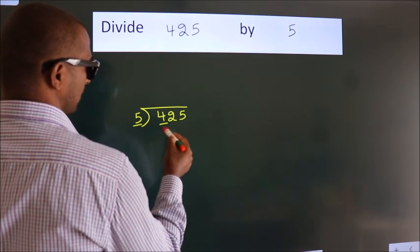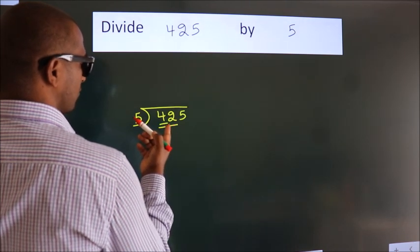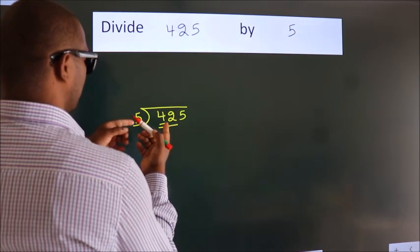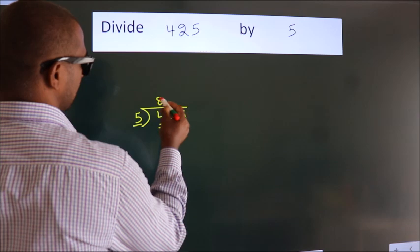So, we should take two numbers: 42. A number close to 42 in the 5 table is 5 times 8, 40.